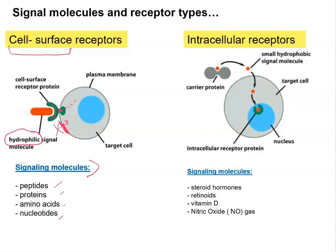Another type is the intracellular receptor, found within the cell. Because signaling molecules are small and hydrophobic — and hydrophobic molecules can cross the membrane directly — intracellular receptors can be found within the cytoplasm or within the nucleus. Examples of hydrophobic signaling molecules include steroid hormones, retinoids like vitamin A, and vitamin D. These bind to receptors sitting within the nucleus, while nitric oxide gas has its receptor within the cytoplasm.